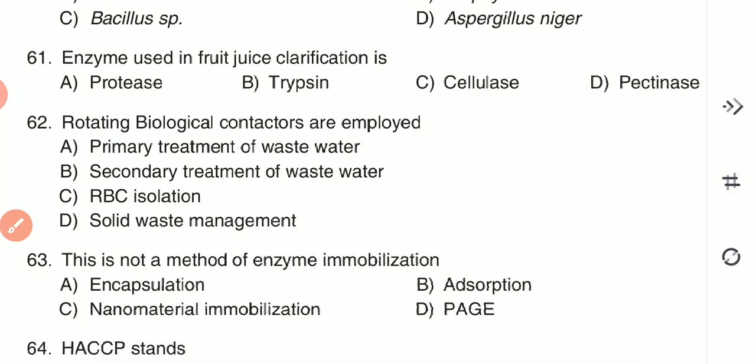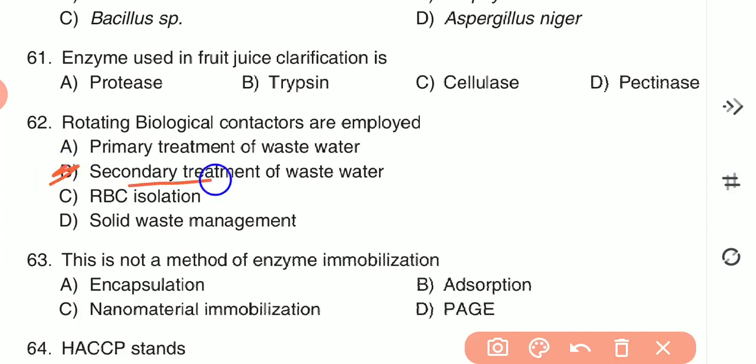Question 62: Rotating biological contactors are employed for — (A) primary treatment of wastewater, (B) secondary treatment of wastewater, (C) RBC isolation, or (D) solid waste management. Rotating biological contactors are employed for secondary treatment of wastewater — option B is the correct answer.